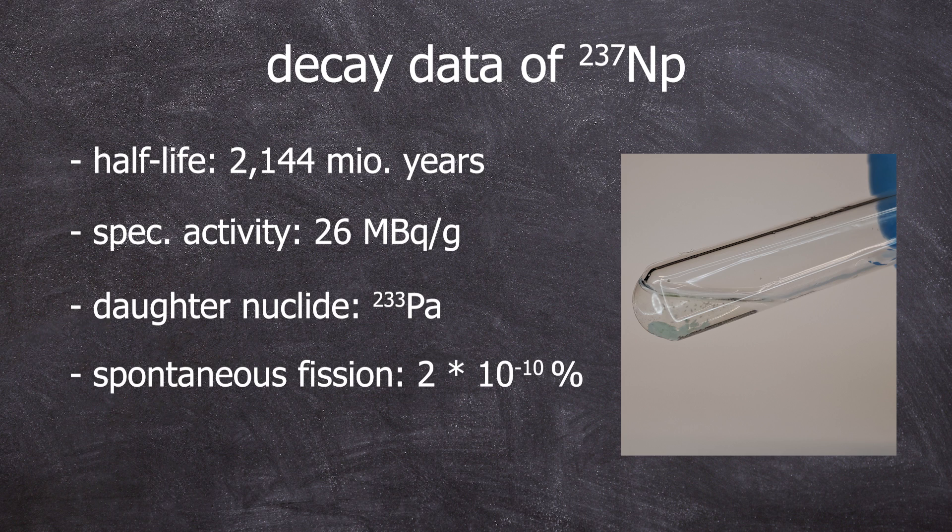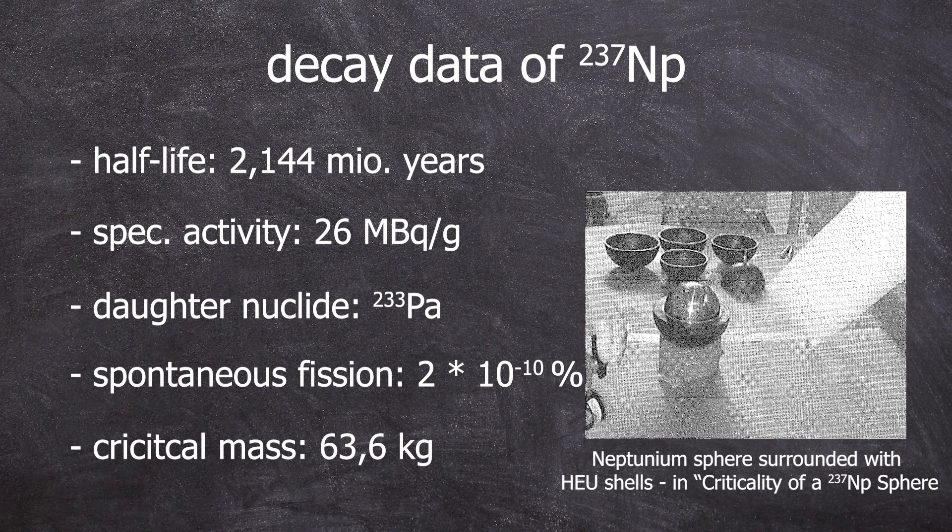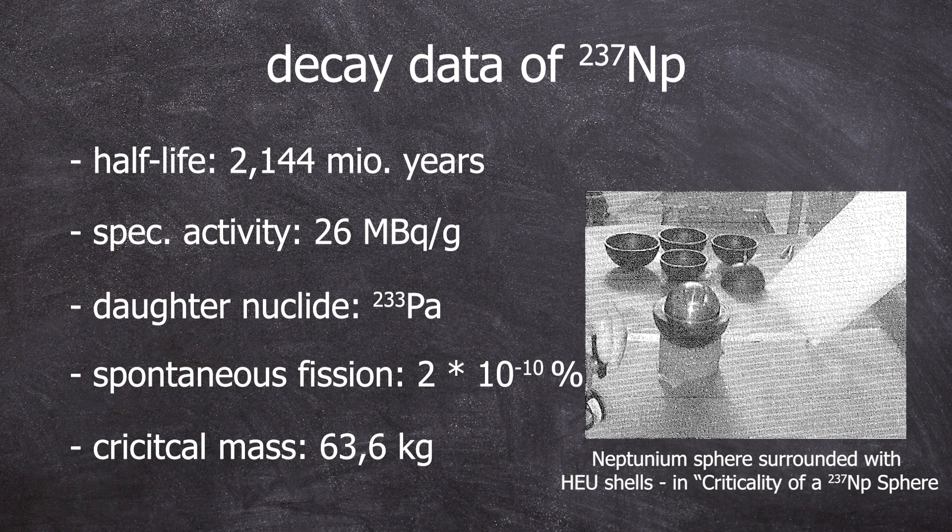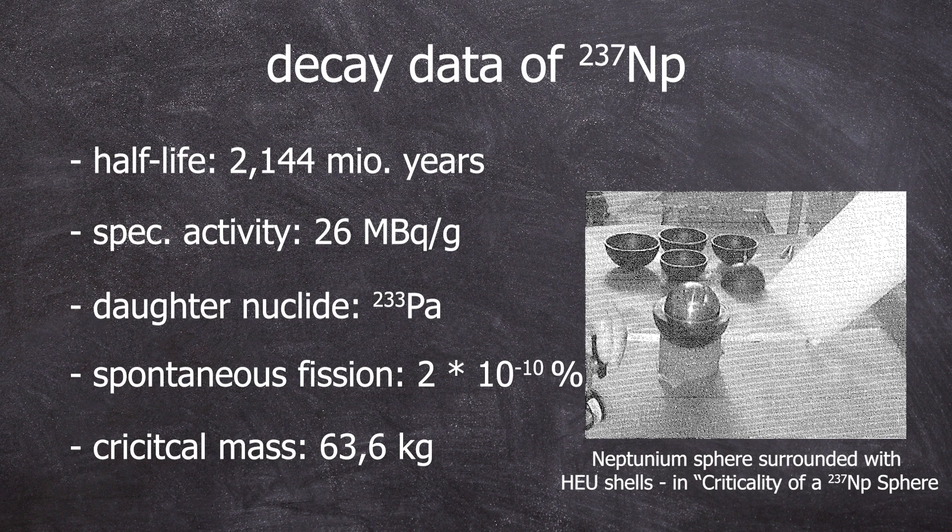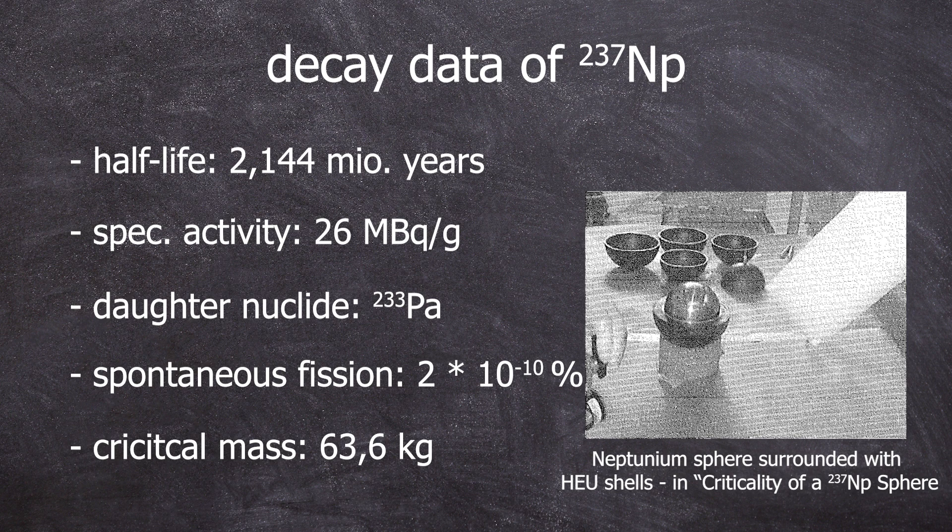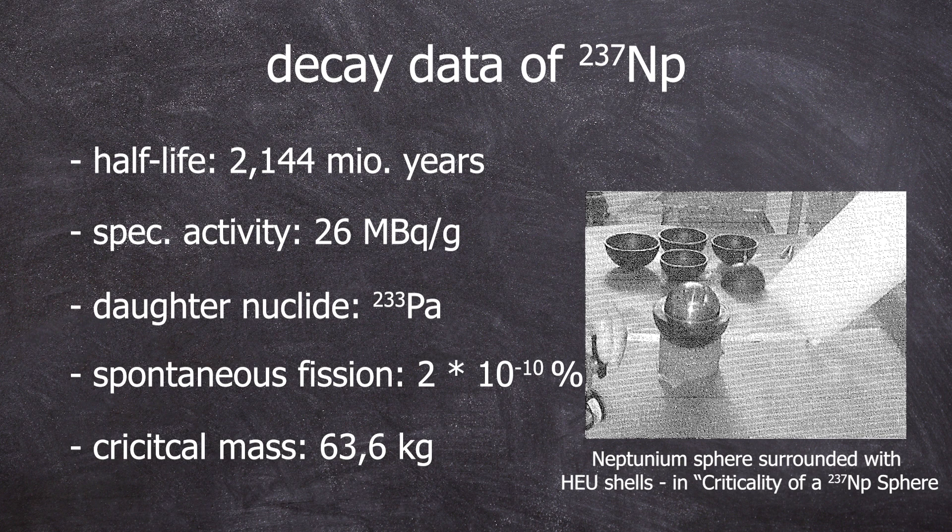Here's a picture of a 6 kilogram Neptunium sphere. To make the whole situation even better, this is not just any ball. This ball is made from highly enriched uranium, as it was part of a criticality test for Neptunium. I've linked the paper in the description, of course.